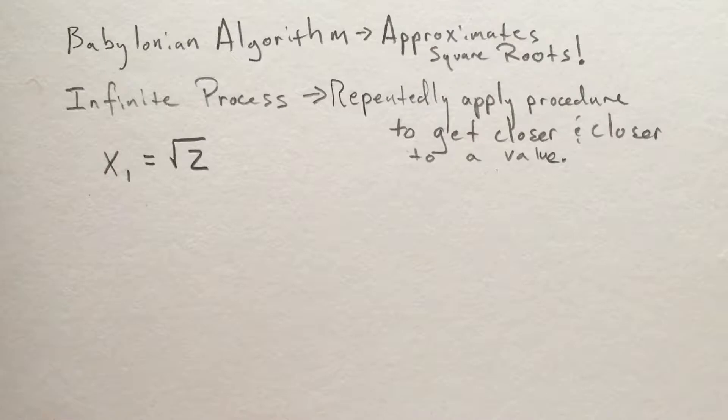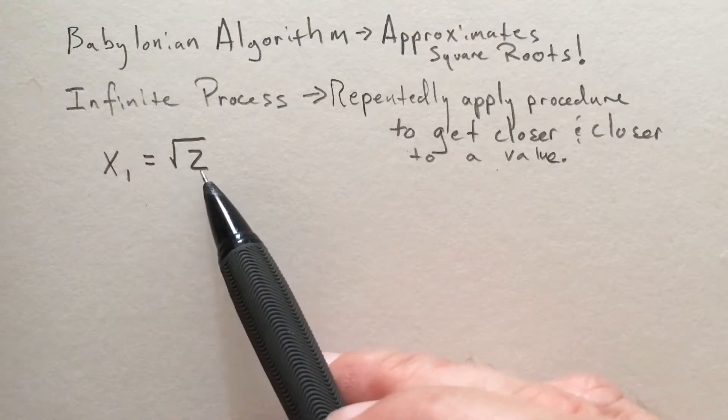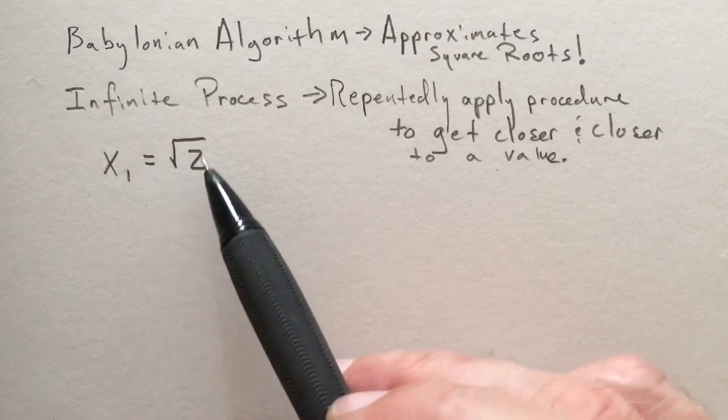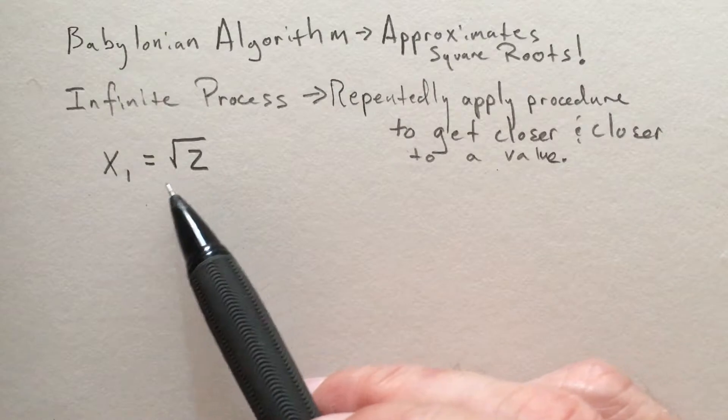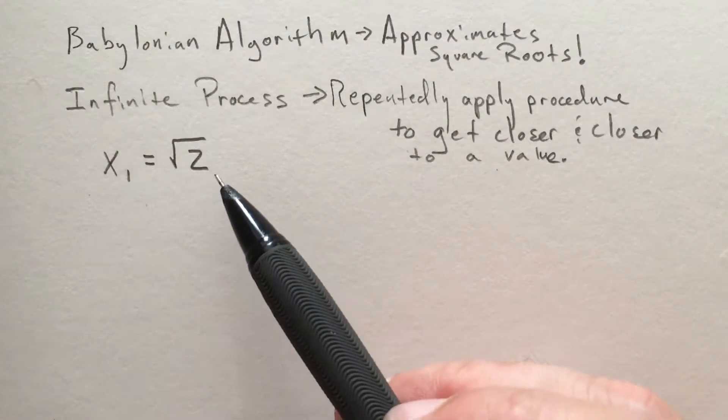The first problem we're going to look at is the Babylonian algorithm for approximating square roots. We're familiar with this symbol, the square root of 2, but how do we write the square root of 2 as a decimal number? That's something we don't do much in school anymore.